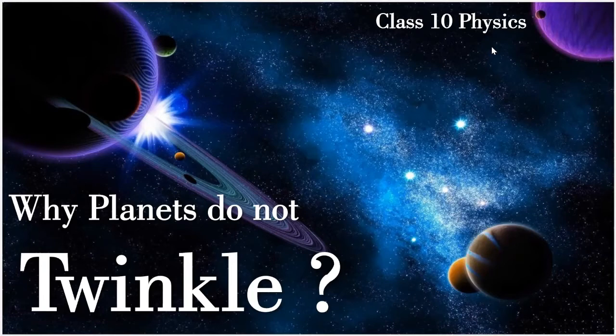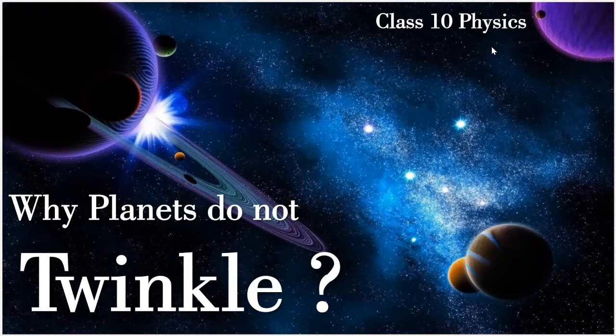Can you tell me the basic difference between a star and a planet? A star has its own light — they produce their own light. On the contrary, planets do not have their own light; they utilize the light which falls on them because of a star. For example, in our solar system, the Sun is our star and all the eight planets are rotating around the Sun. The light falling on them from the Sun is why they are seen — they do not have their own light.